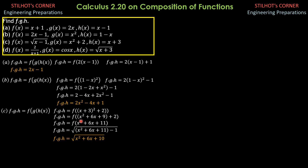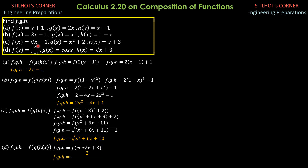That's it for part c. For part d, f of g of h is f of g of h of x. We have f of cosine of square root of (x plus 3). Then f of g of h is 2 over cosine of square root of (x plus 3) plus 1. That's it for part d.